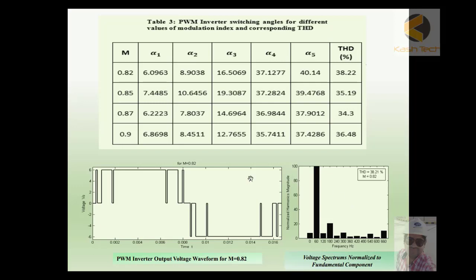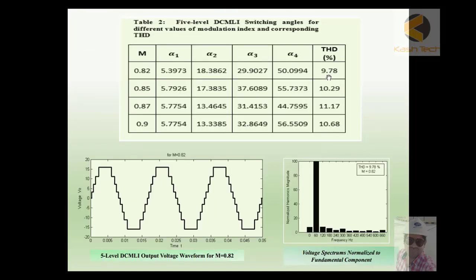Here we can see different modulation indices. We can see the performance of pulse width modulation — for example, at a 0.82 modulation index we are getting a THD (total harmonic distortion) of 38.22%, which is fairly high. When the modulation index is increased, THD also increases. This technique is useful but still has a very high THD value compared to our previous technique DCM-LI, where we were achieving up to around 10 percent.